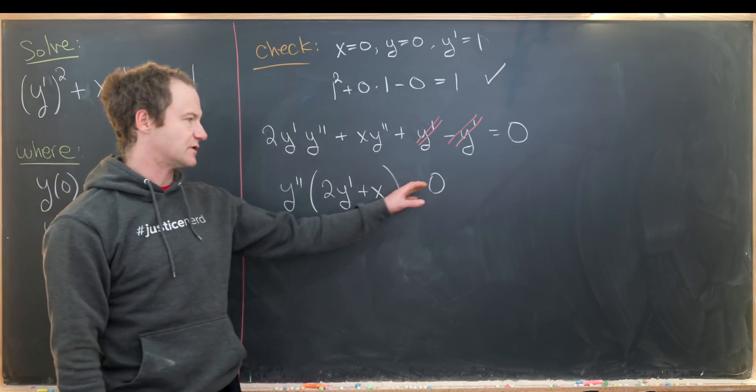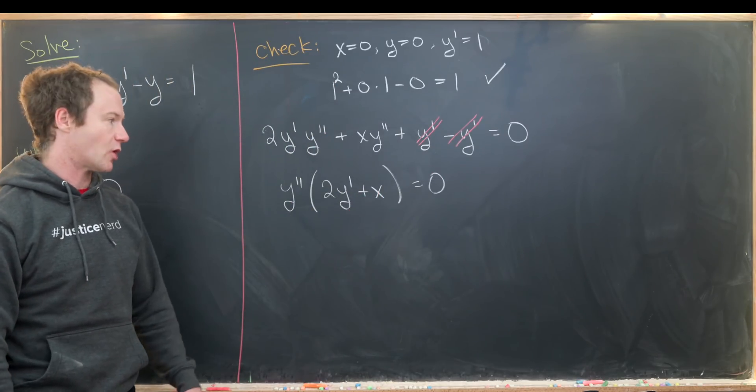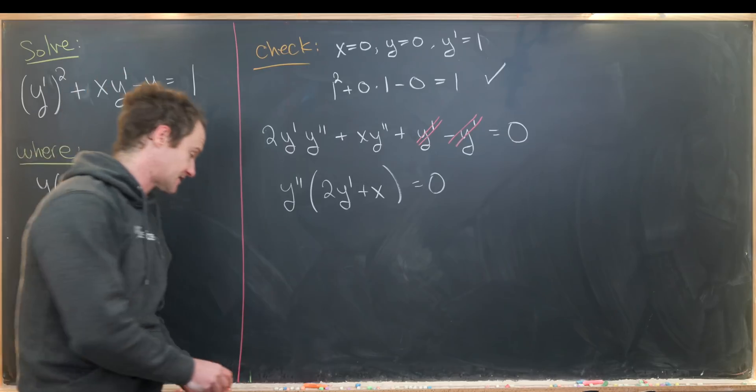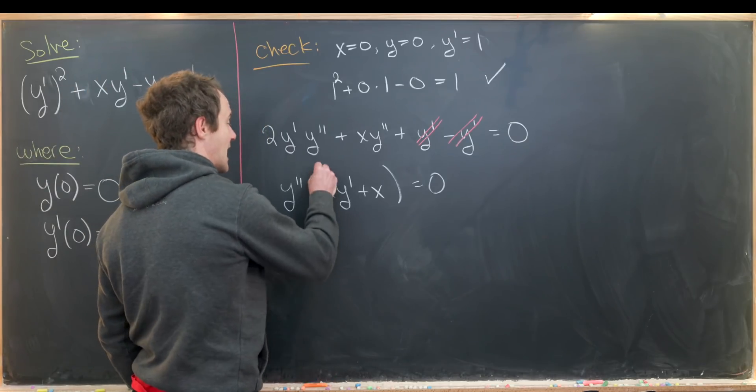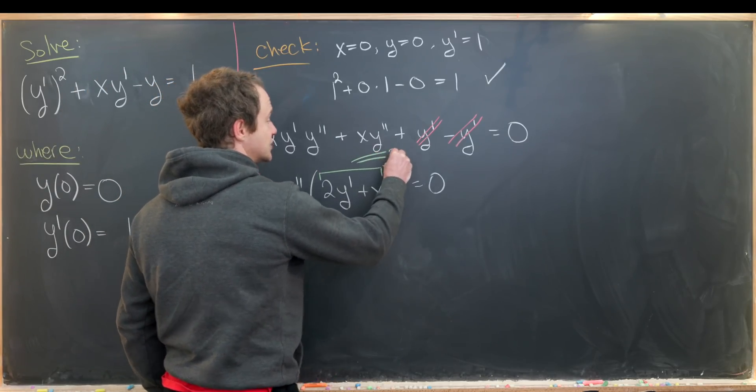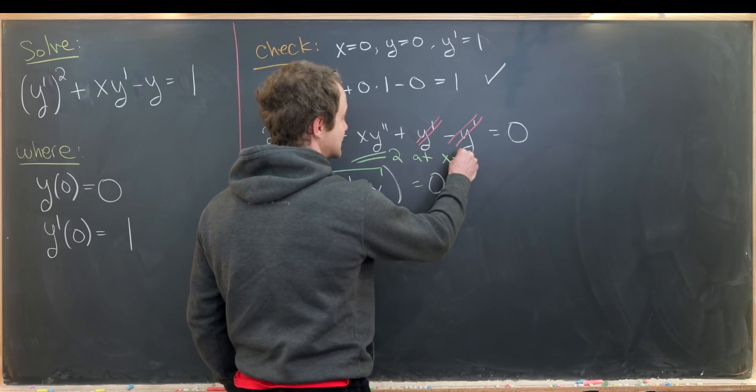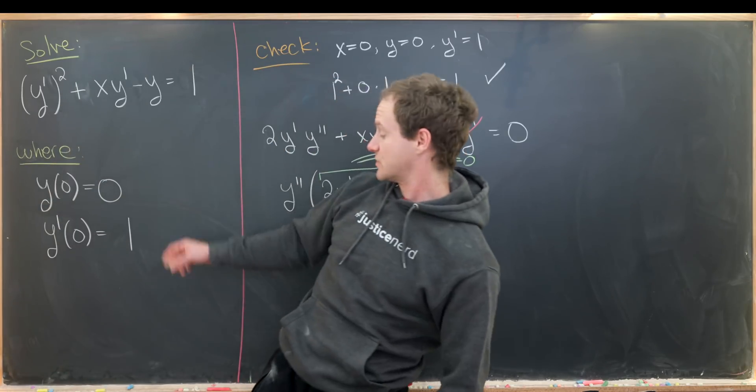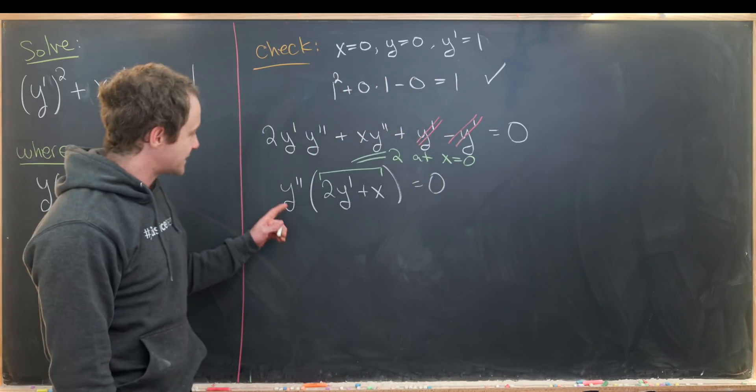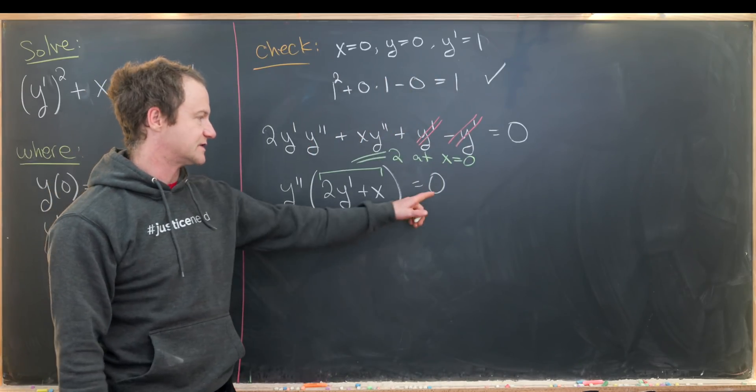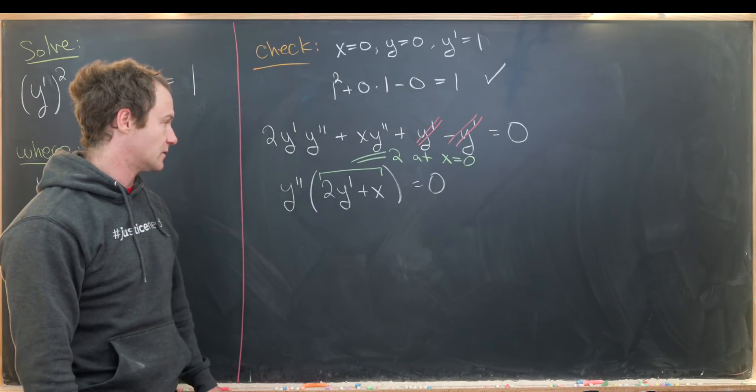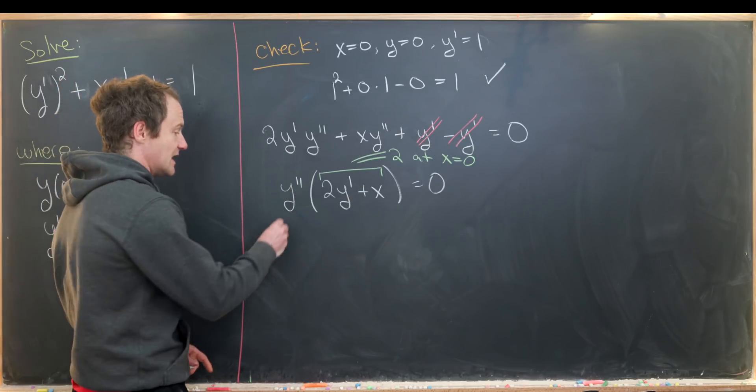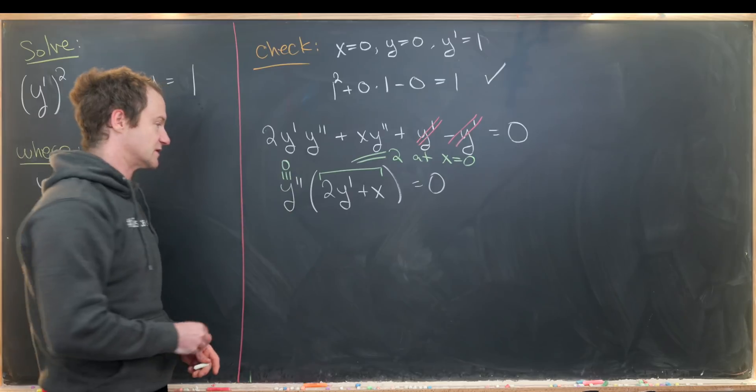But this equals 0 not somewhere but equals 0 everywhere, in other words for all values of x. But let's notice that by our initial condition this is equal to 2 at x = 0, and that's from our initial condition. So if we've got a product of these two things which is always equal to 0, and we found a place where this is non-zero, that means this guy right here must always be equal to 0.